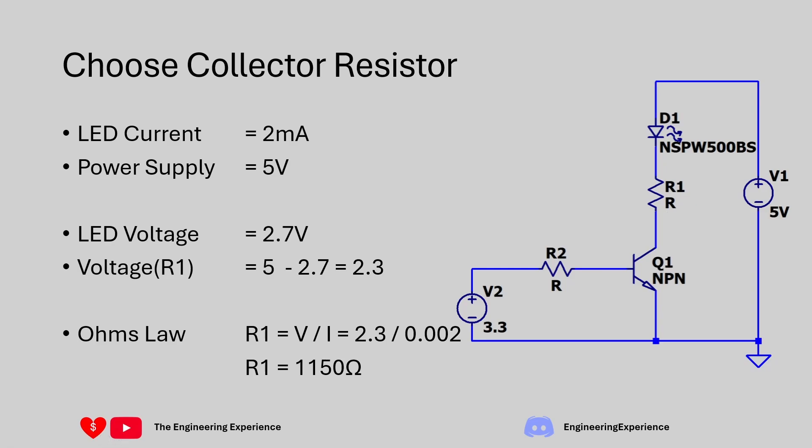This resistor value might not be available in real life, so find the closest value - if you have current limitations, go to the next value up. When selecting the resistor, make sure it can handle the power dissipation. In this case, P equals VI: 2.3 volts times 2 milliamps gives approximately 5 milliwatts. Most resistors are rated above that - typically 50 milliwatts - so that should be fine.